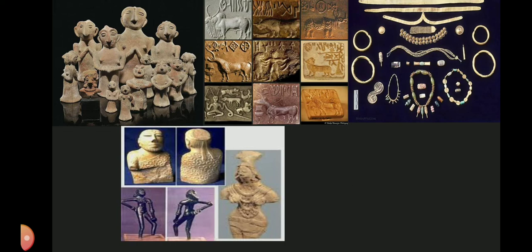Ornaments and Beads: Ornaments used by Harappan men and women were produced from materials ranging from precious metals and gemstones to bones and baked clay. Women generally wore girdles, earrings and anklets, while necklaces, fillets, armlets and finger rings were worn by both sexes. The rich wore gold ornaments while the poor used bone, shell or copper. The bead industry was well developed — beads of disc, cylindrical, spherical, barrel and segmented shapes have been discovered, some decorated by incising, painting or etching. Harappans also made excellent figures of animals like monkeys and squirrels used as beads or pin-heads.